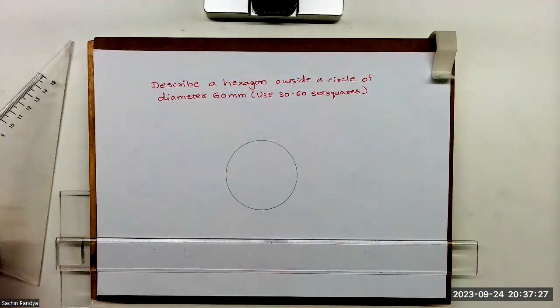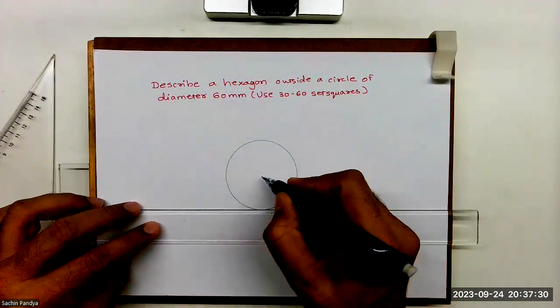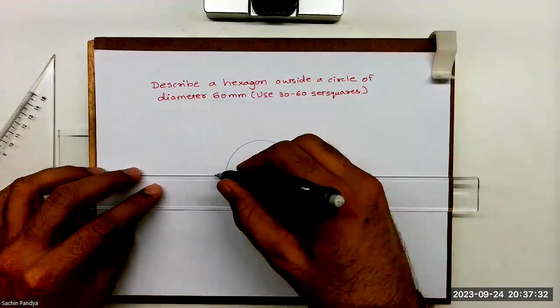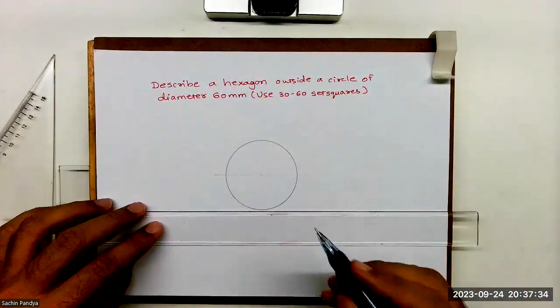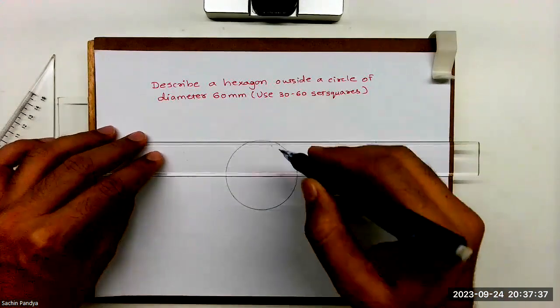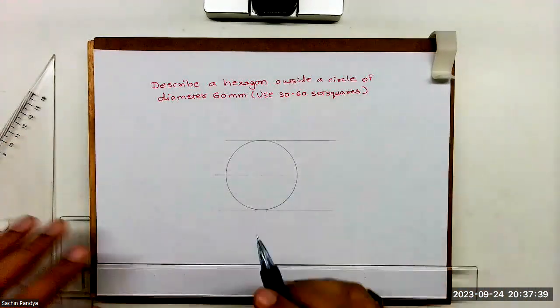After drawing that, now we need to use 30-60 set square. So this is a center. I'll just draw one horizontal line from bottom as well as from the top. I'm just drawing that line.